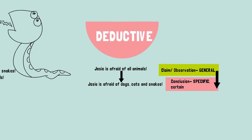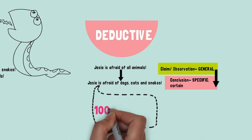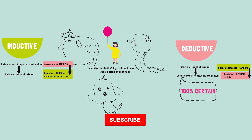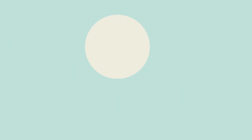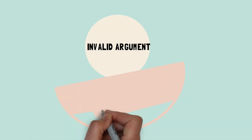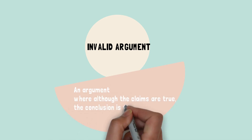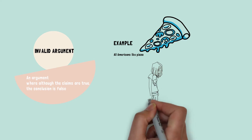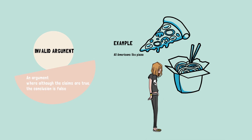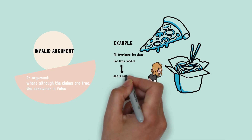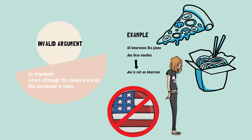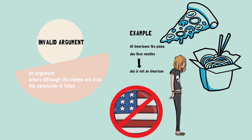Be mindful of valid, invalid, strong or weak arguments. Provided that the claim is true, in the deductive reasoning example we reach a conclusion which is 100% certain — so we have a valid argument. An invalid argument could be one where, although the claims are true, the conclusion is false. Although both premises are true, the conclusion makes an invalid assumption — in this case, the conclusion is an overgeneralization.